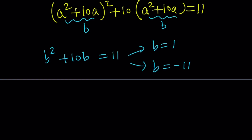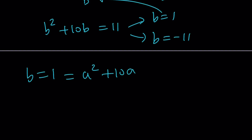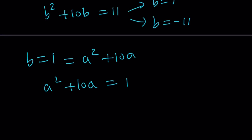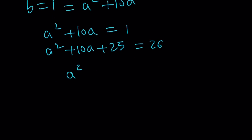Always check for sum of coefficients because that gives you 1 as a solution. So those are the solutions for B. Now we take each one. If B equals 1, then B is a squared plus 10a, so this gives us the quadratic equation a squared plus 10a equals 1. It's not factorable, so I'll use completing the square. How do you find the magical number to add? Take the coefficient in the middle, cut it in half, and square it. Half of 10 is 5, and 5 squared is 25.